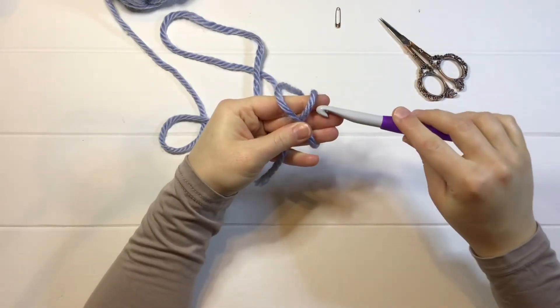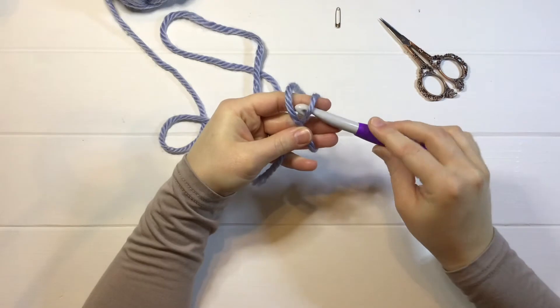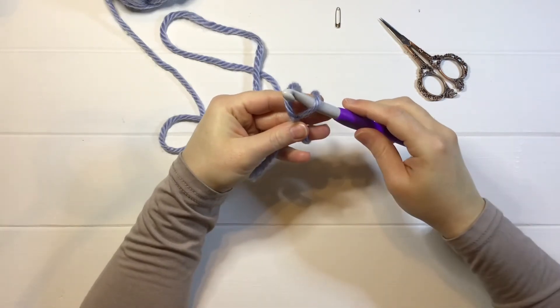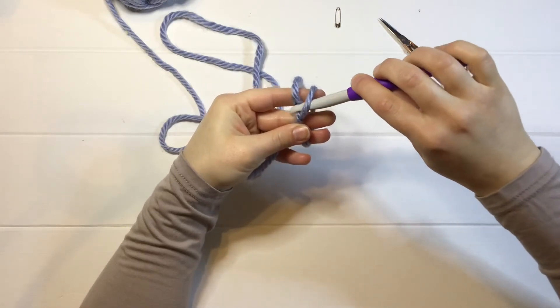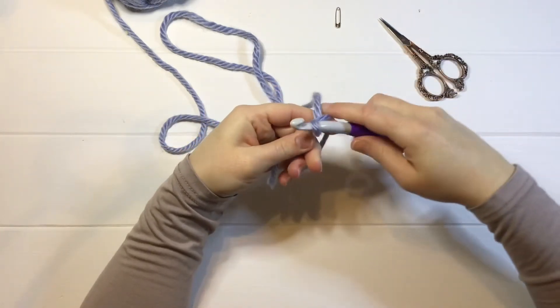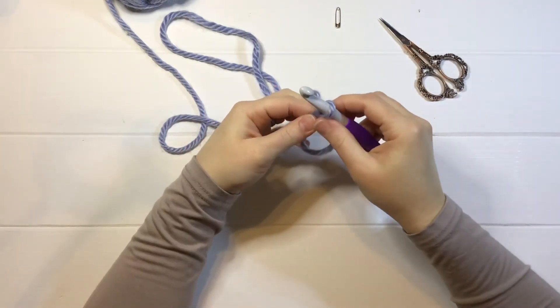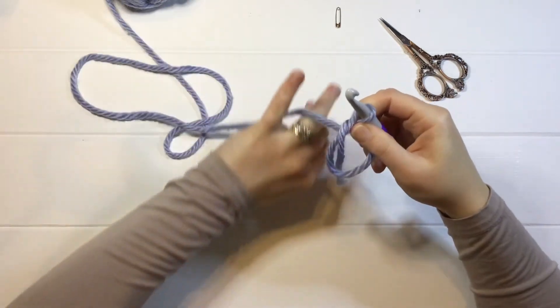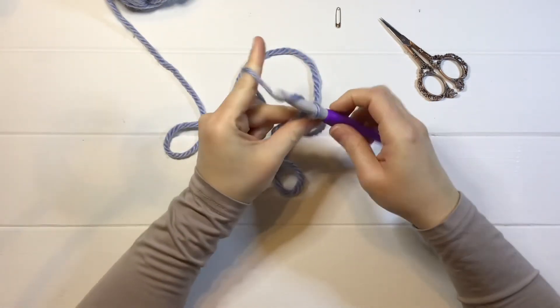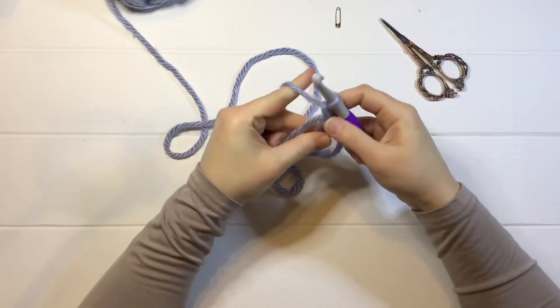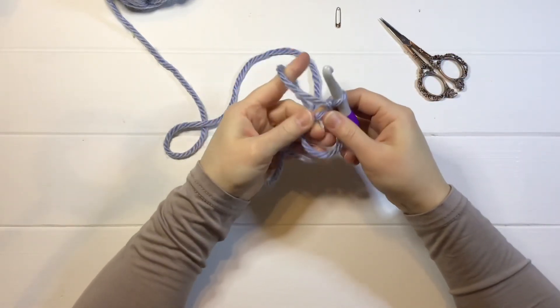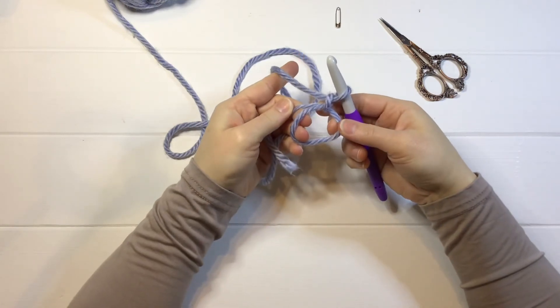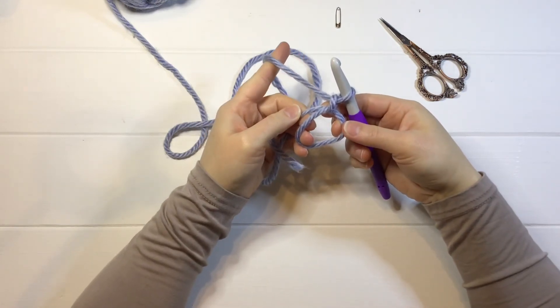Insert your hook under that first loop there. Then you're going to grab this back loop here of yarn, and pull it under the first one, and come around, and you'll do a slip stitch here. Just kind of tighten stuff up a little. There you go. And that is how you do a magic circle.